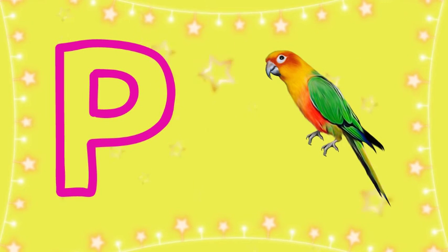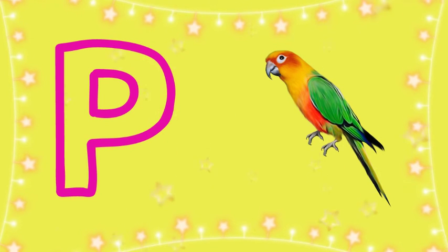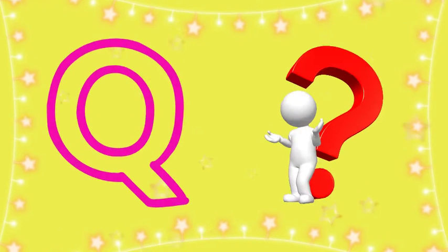P for Parrot, Parrot means Tota. Q for Question, Question means Prashn. R for Red, Red means Lal.